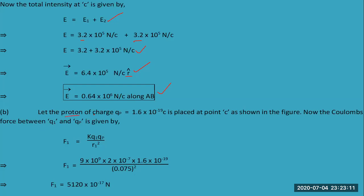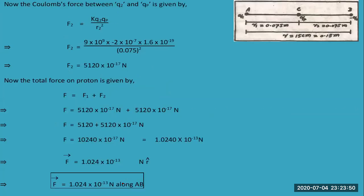Now let the proton of charge qp, where the charge of a proton is 1.6 × 10^-19 coulombs, be placed at point C. Using Coulomb's law between q1 and qp, here is the charge of the proton, the charge of q1, and the distance of 0.075 meters. After putting the values, we have calculated the force acting on the proton, which is 5.12 × 10^-17 N.